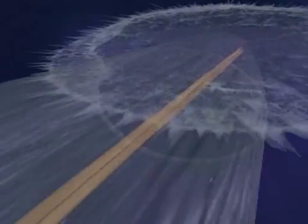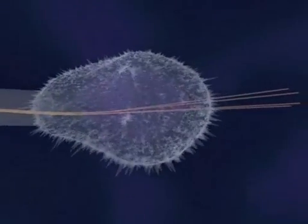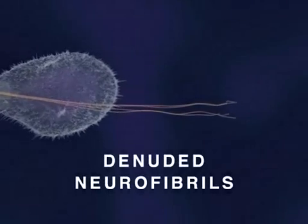Ultimately, both the developing neurite and its growth cone collapse, and some denuded neurofibrils form aggregates, or tangles, as depicted here.